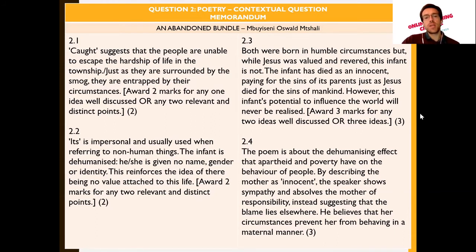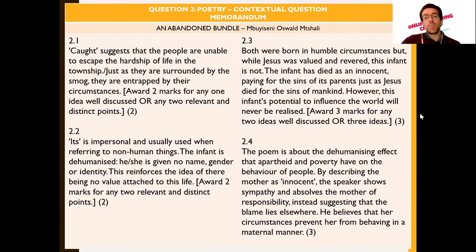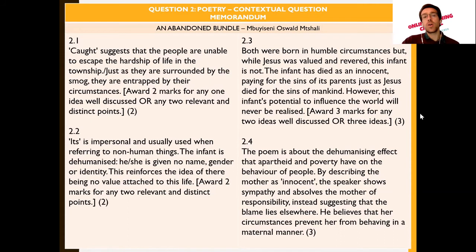Question 2.4 refers to lines 22 to 25 — 'its mother... as untrampled dew' — and asks us to critically discuss how these lines contribute to the central idea of the poem. The poem is about the dehumanizing effects that apartheid and poverty have on the behavior of people. By describing the mother as innocent, the speaker shows sympathy and absolves the mother of responsibility, suggesting that blame lies elsewhere. These circumstances are not due to her own decisions but are a consequence of the socioeconomic environment in which the family resides.